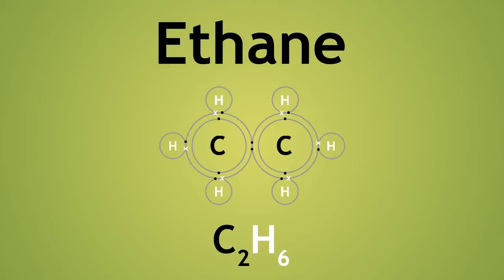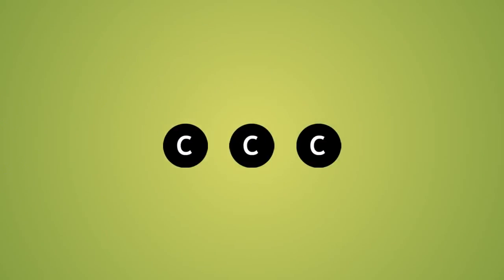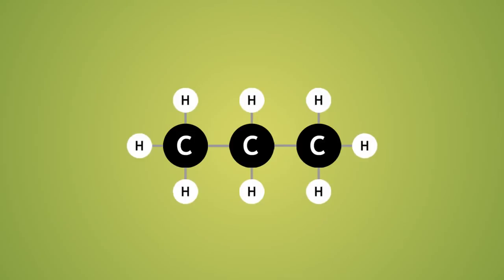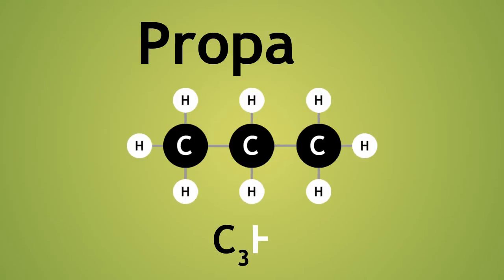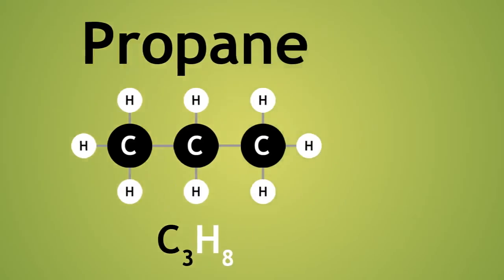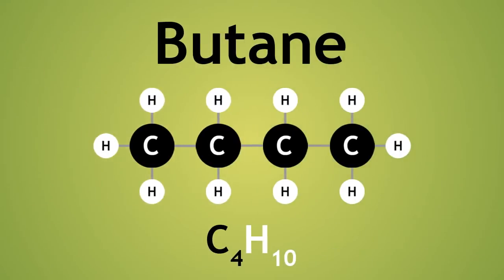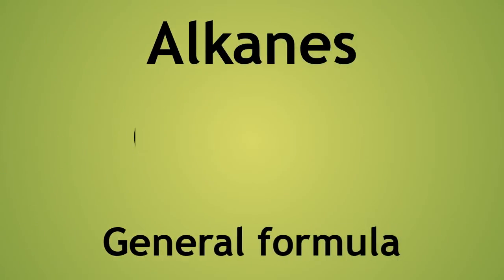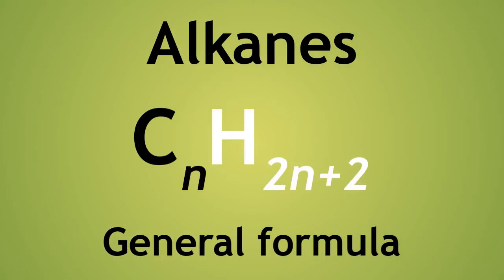Now we understand the way these molecules are bonded, we can show the next molecule in displayed formula, representing the covalent bonds simply with lines. Here is propane, followed by butane. This alkane series continues and follows the general formula CnH2n+2.